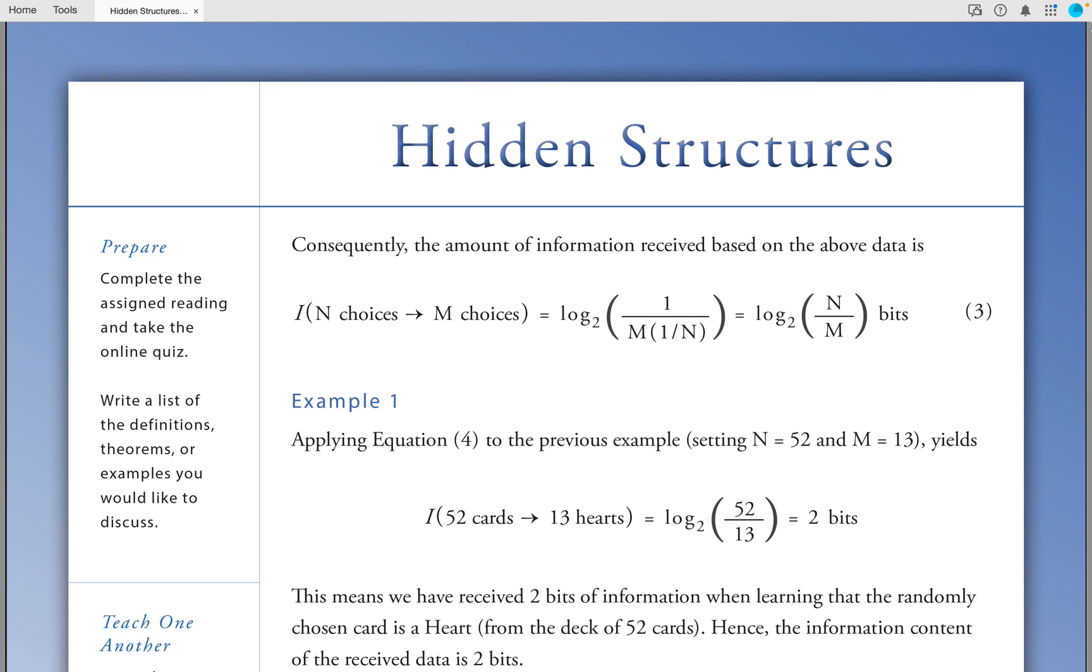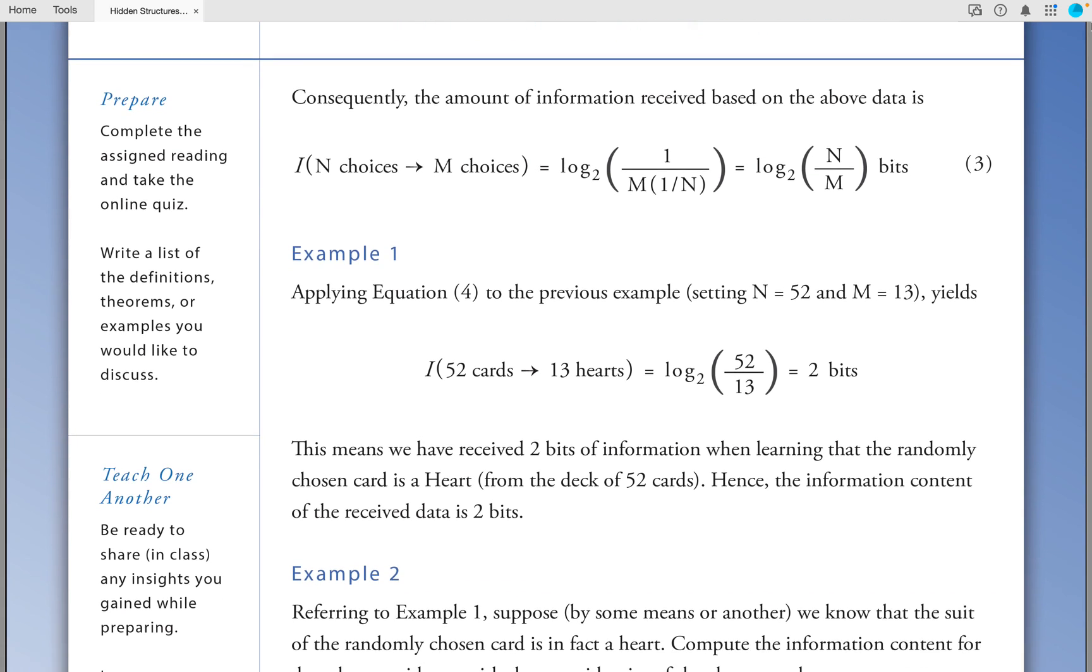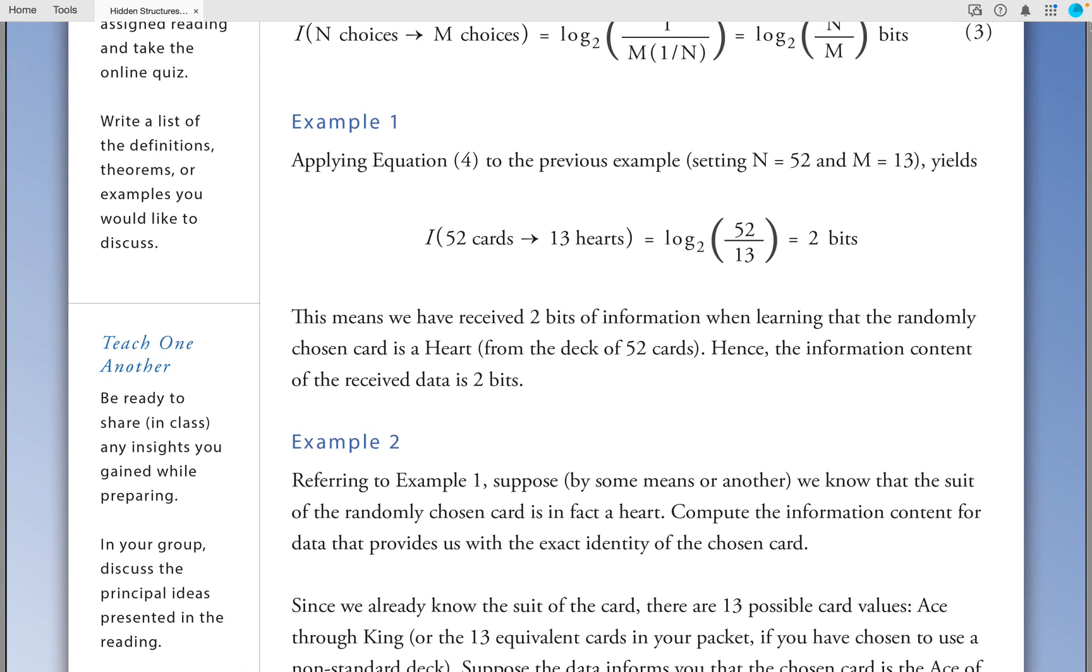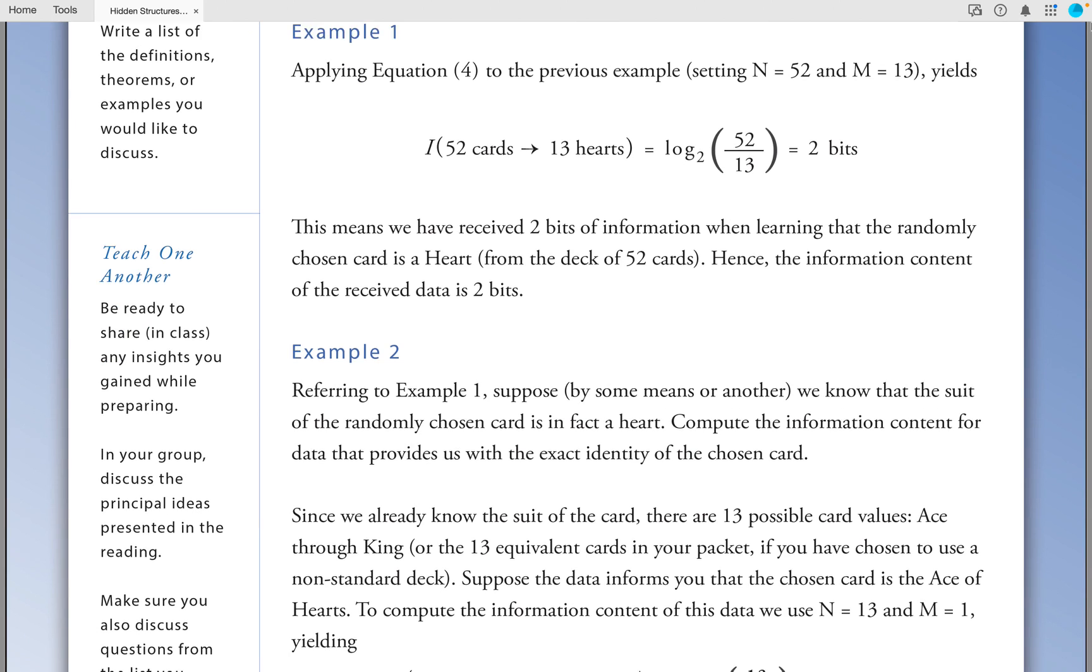Example 1: Applying equation 4 to the previous example, setting n equal to 52 and m equal to 13 yields the following: log base 2 of 52 over 13, which is equal to 2 bits. This means we have received 2 bits of information when learning that the randomly chosen card is a heart from the deck of 52 cards. Hence, the information content of the received data is 2 bits.